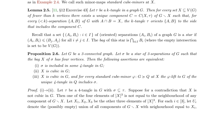To prove Proposition 2.6, the authors assume that X is not cubic in G and derive a contradiction. They let X1, X2, X3 be the other three elements of X, and for each i in {1,2,3}, they denote by Ui the (possibly empty) union of all components of G-X with neighborhood equal to Xi. The proof continues by examining the properties of these components and their relationships with X and the rest of the graph, ultimately leading to a contradiction and thus proving the proposition.